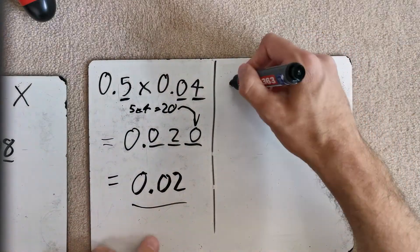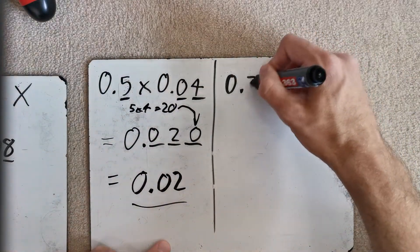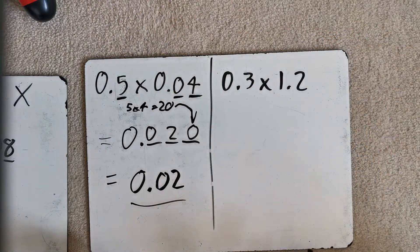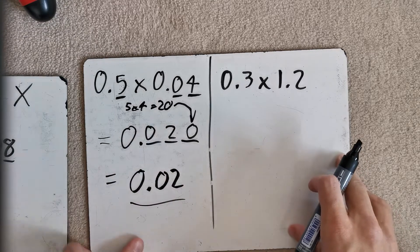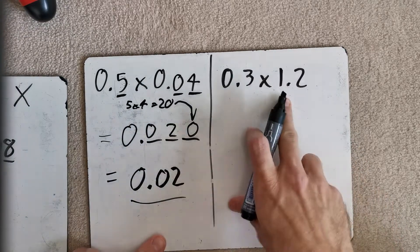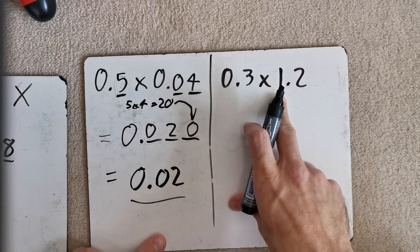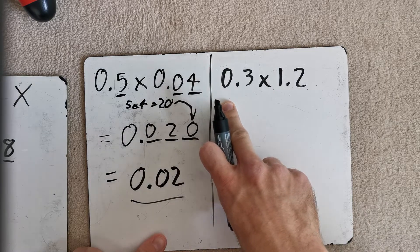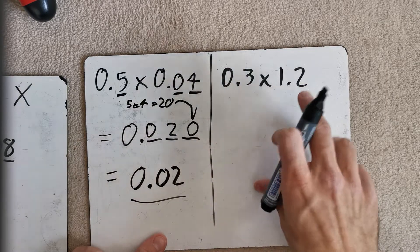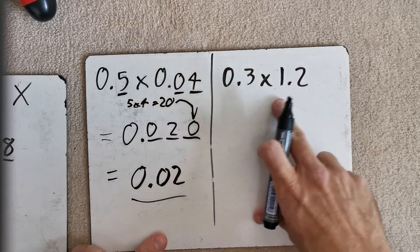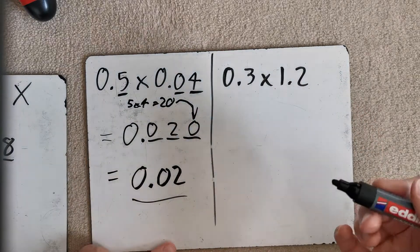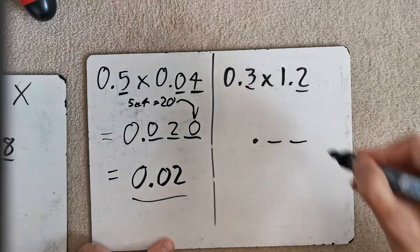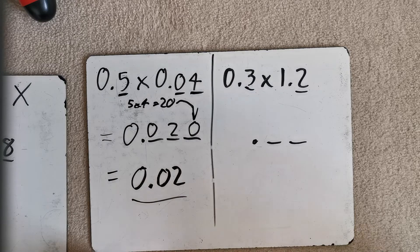Let's do another quick one. 0.3 times by 1.2. Okay. Another classic mistake that people make here is they forget that 1 is there. Don't think of this as something being similar to 3 times 2. Don't think of it like that. This is similar to 3 times 12. All right. Again, 1, 2 decimal places in the question. 1, 2 decimal places in the answer. All right.